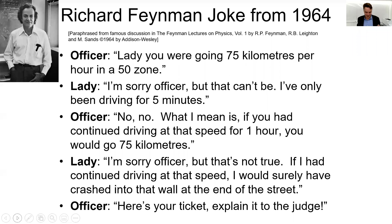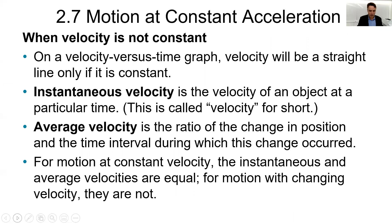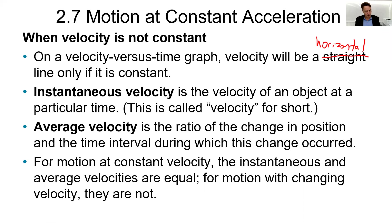Instantaneous velocity is the velocity of an object at a particular time. Average velocity is the ratio of the change in position to the time interval during which this change occurred. For motion at constant velocity, the instantaneous and average velocities are equal. For motion with changing velocity, they're not. There are three equations of constant acceleration from chapter two.